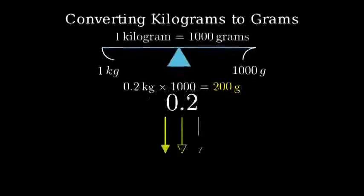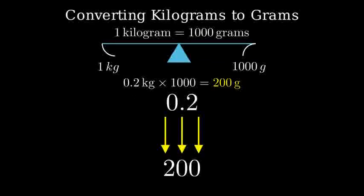Here's another way to think about it. When we multiply by 1,000, we can simply move the decimal point 3 places to the right. So 0.2 becomes 200.